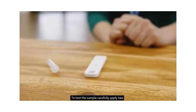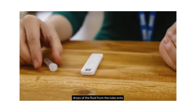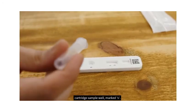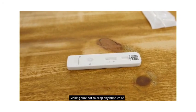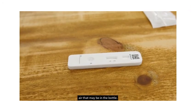To test the sample, carefully apply two drops of the fluid from the tube onto the test cartridge sample well marked S, making sure not to drop any bubbles of air that may be in the bottle.